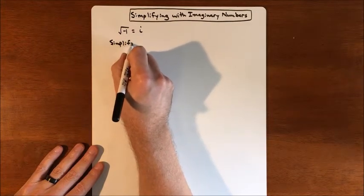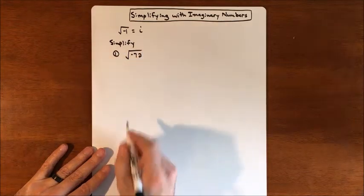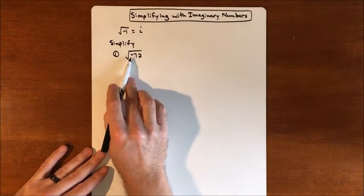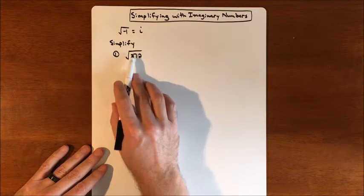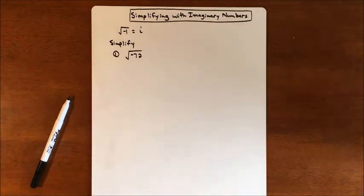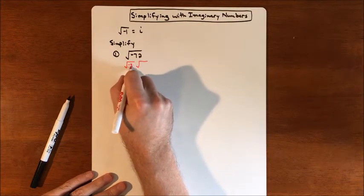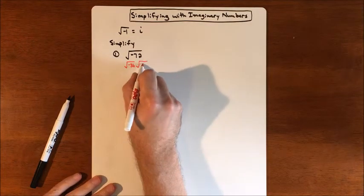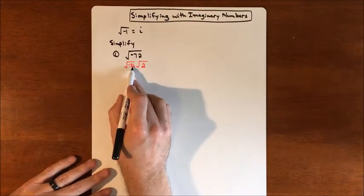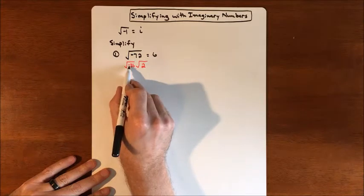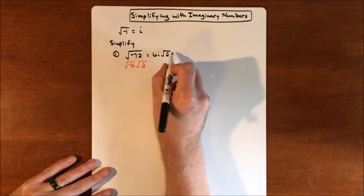Let's simplify the square root of negative 72. When negatives come in, we can't square root a negative, so we represent it with a symbol. We break off the biggest perfect square, which is 36, leaving 2 as the other value. The square root of 36 is 6, but since we're square rooting a negative, we symbolize that as 6i, times the square root of 2.